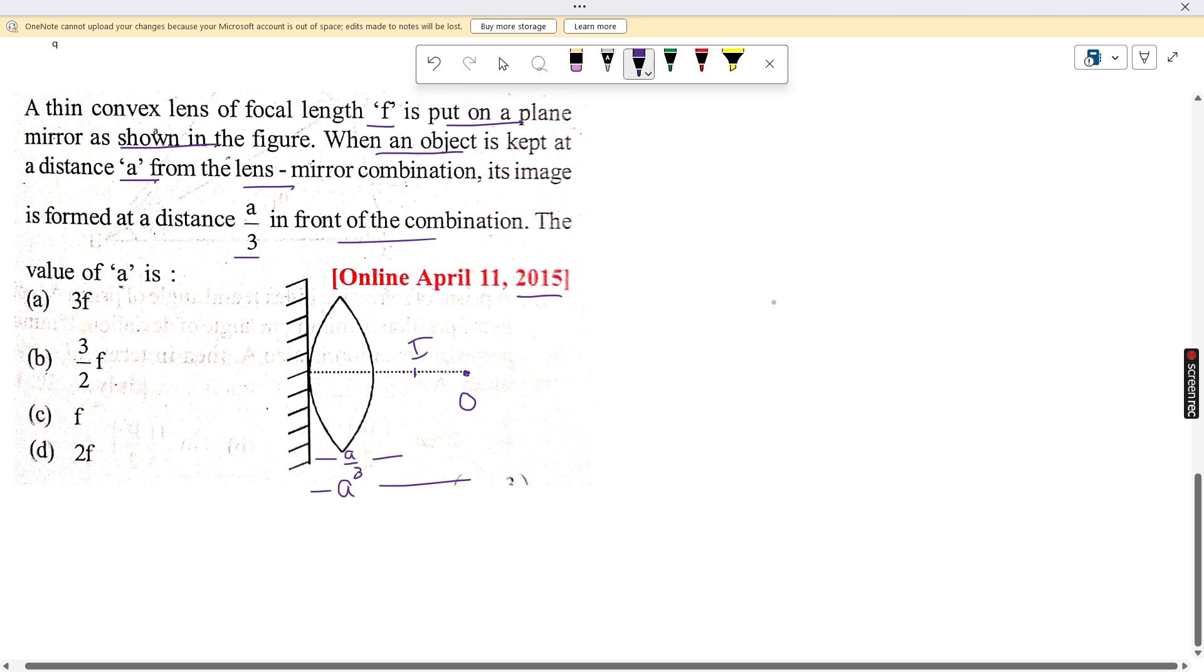So we need to find what a is. So first we will apply this approach: the light ray from the object encounters the lens, then the mirror.